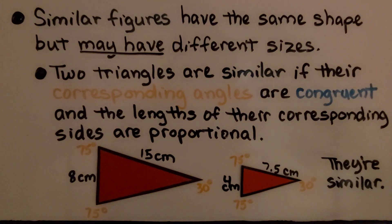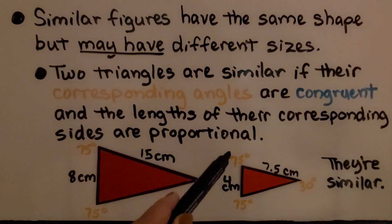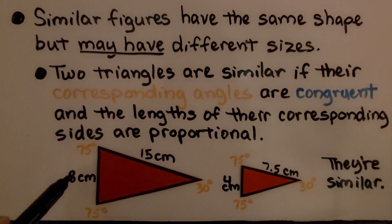Take a look at these two red triangles. We can see that this angle is 75 degrees, and this angle is 75 degrees, and this angle is 30. This triangle has angles that are 75, 75, and 30. When we look at the sides, this one is 8 centimeters in length.